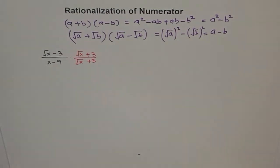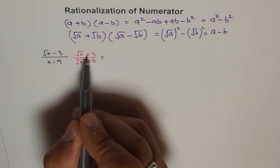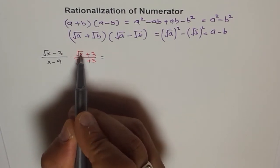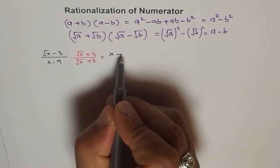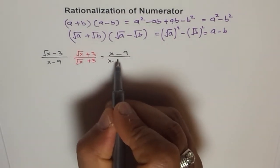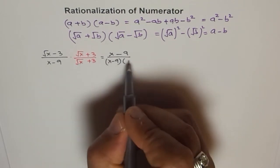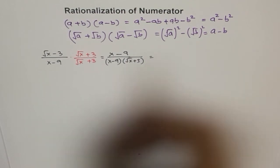And when you do that, then what do you get in the numerator? You get square of this term minus square of this term. Square of square root is just the number x, the variable x, and minus 3 squared is 9. And the denominator, we have x minus 9 times the conjugate. That's what we get.